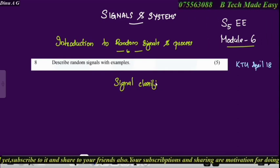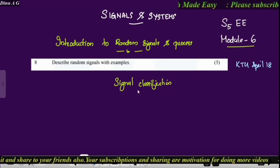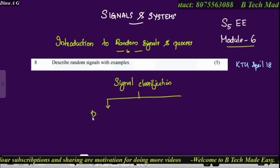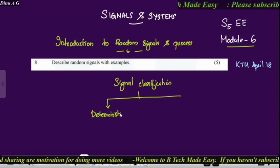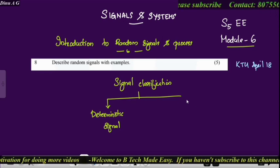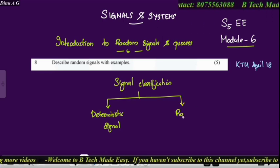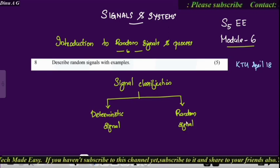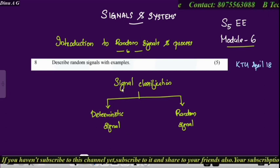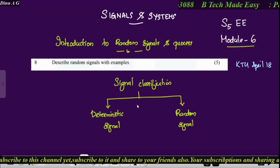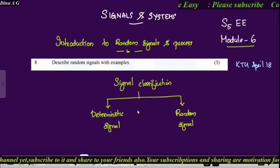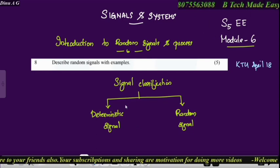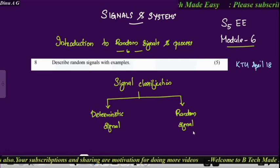Signal classification: there are two types. The first type is called a deterministic signal, and the second is a random signal. Within deterministic signals, we have classifications such as continuous time signal, discrete time signal, periodic signal, causal signal, energy signal, and power signal. That covers the whole classification of deterministic signals and random signals.